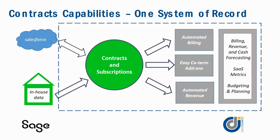The contracts module allows you to get contracts from Salesforce or in-house data. Once it comes into the contracts and subscriptions module, we have automated billing that supports multi-currency, variable recurring and rollover usage billing, fixed price with billing schedules, invoice scheduling, and generation by month, quarter, or annual cadence.